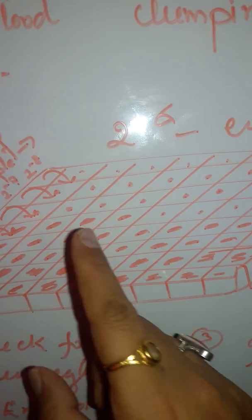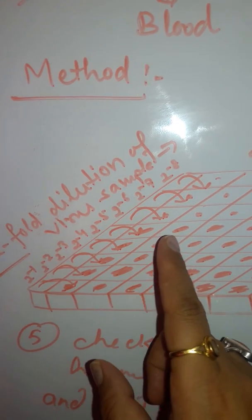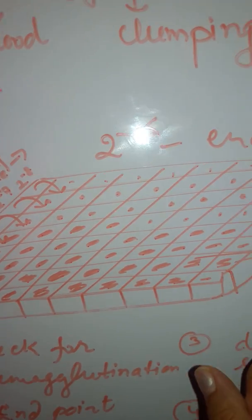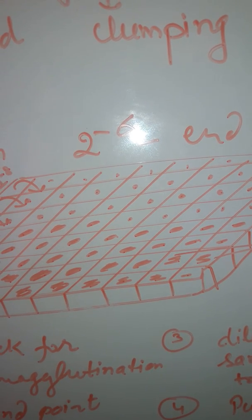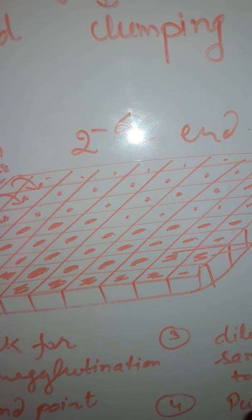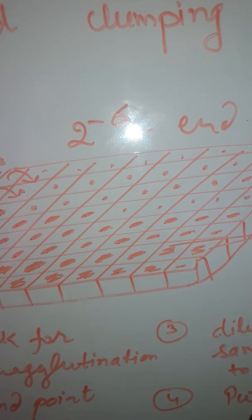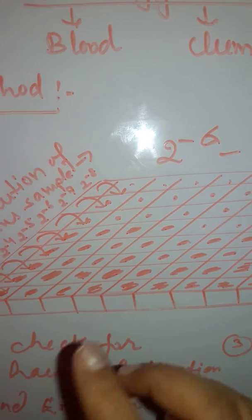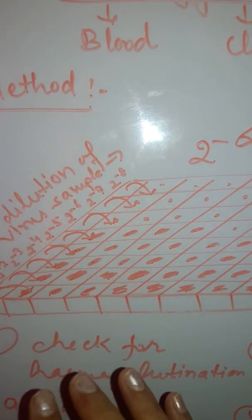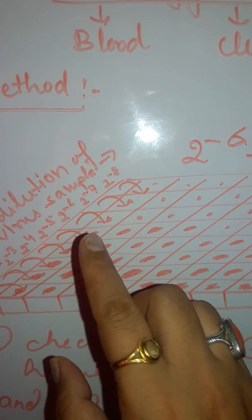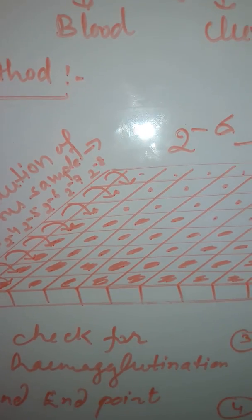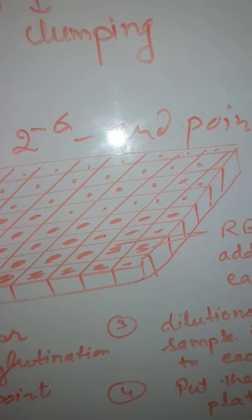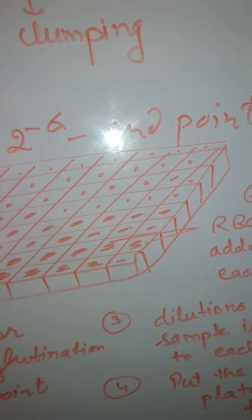After a specific dilution — such as 2 raised to minus 6 — half of the wells show hemagglutination and the rest show button formation, meaning RBCs settle at the bottom and there is no hemagglutination. This is the endpoint of the dilution, meaning the virus sample is infectious up to this concentration. Beyond this dilution, the virus cannot show any hemagglutination — this is the endpoint.